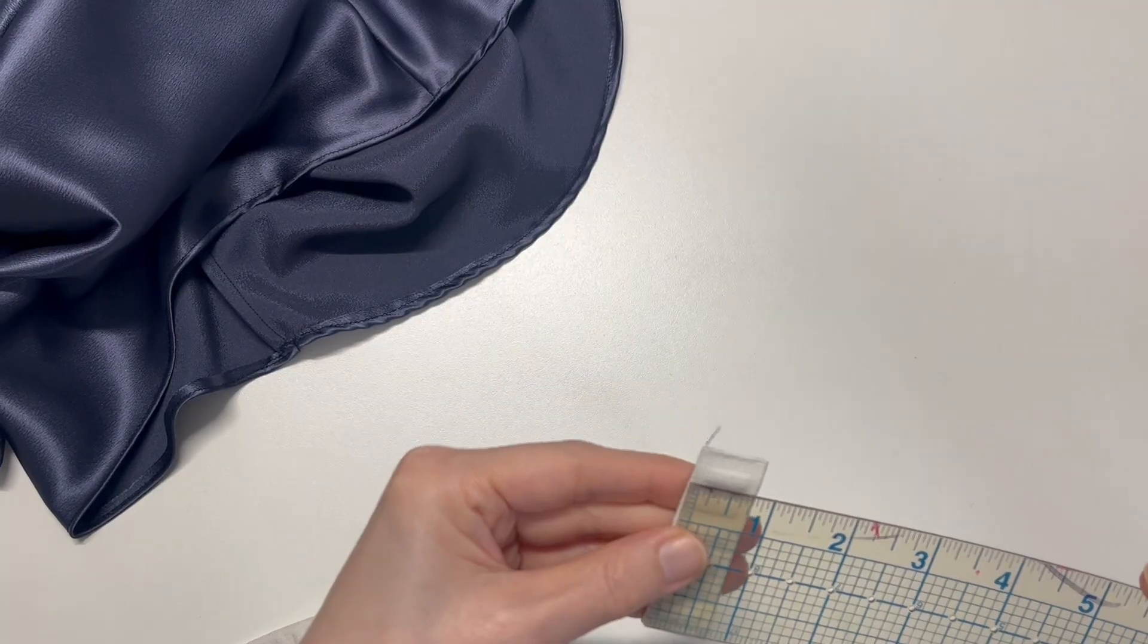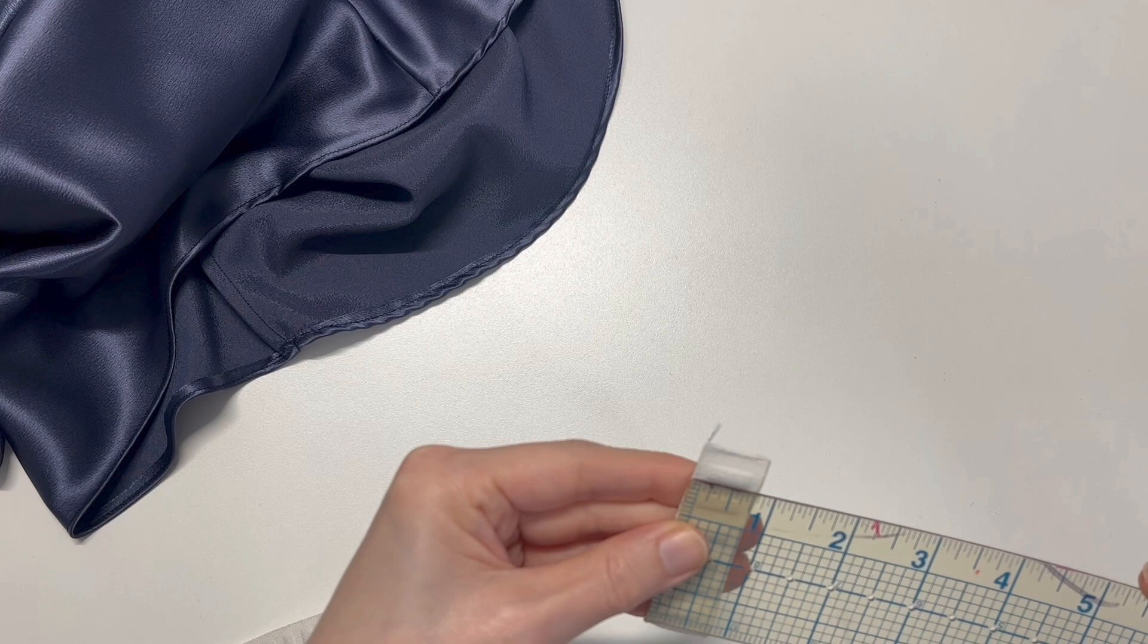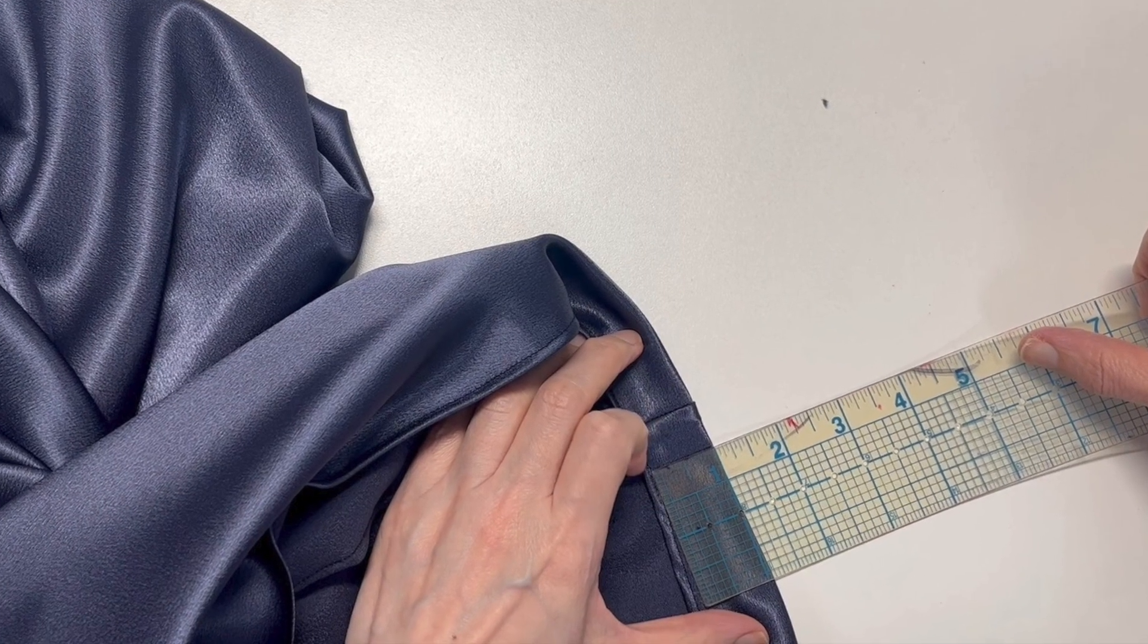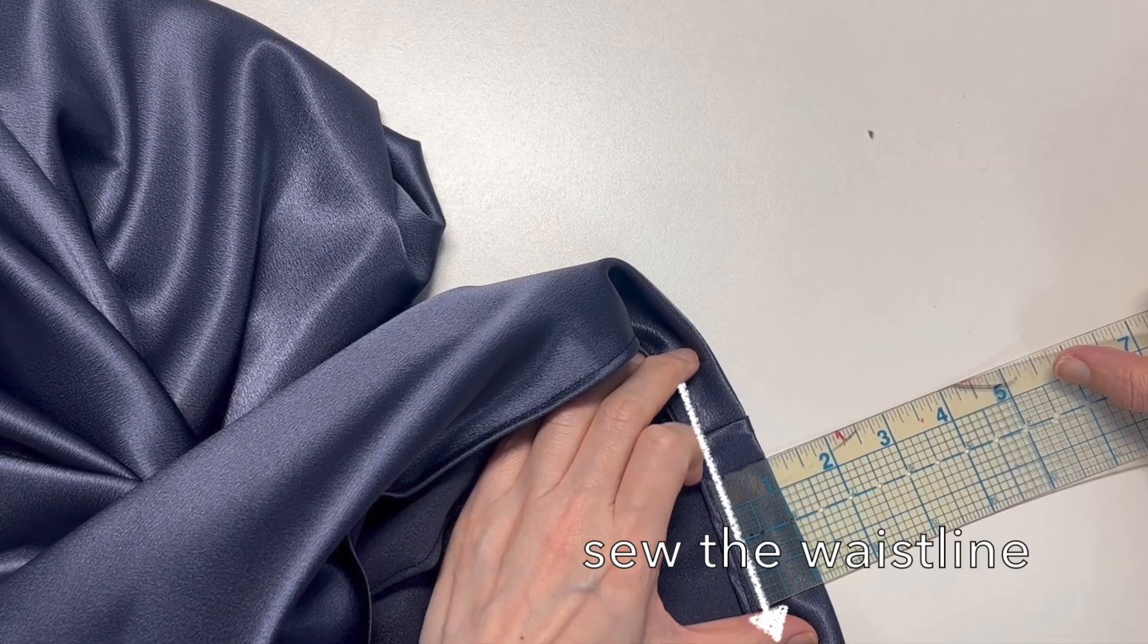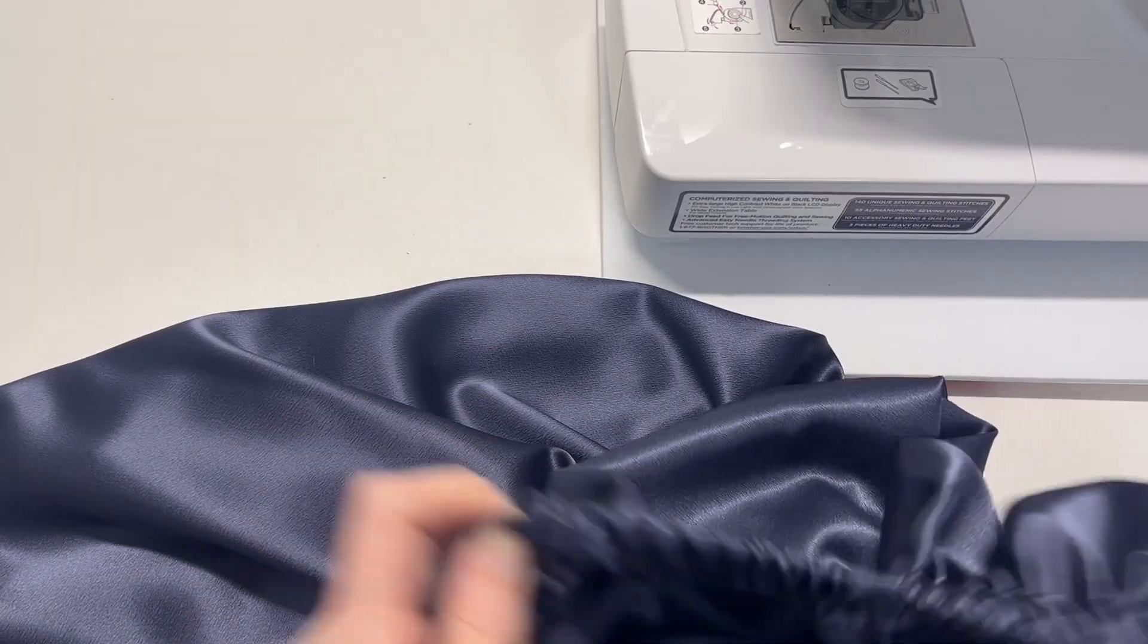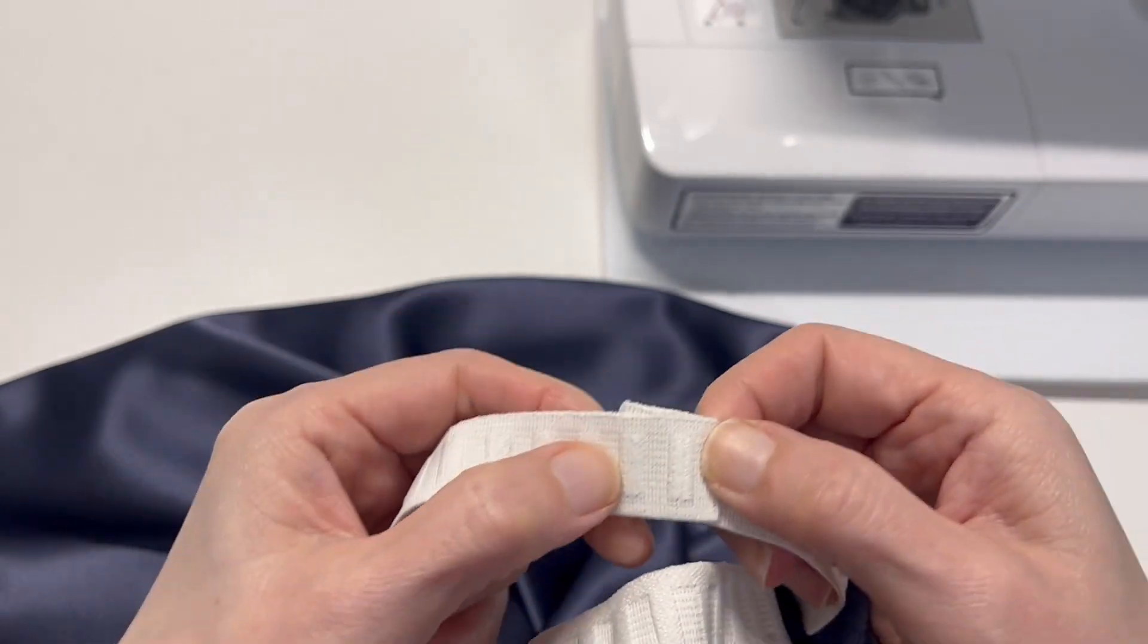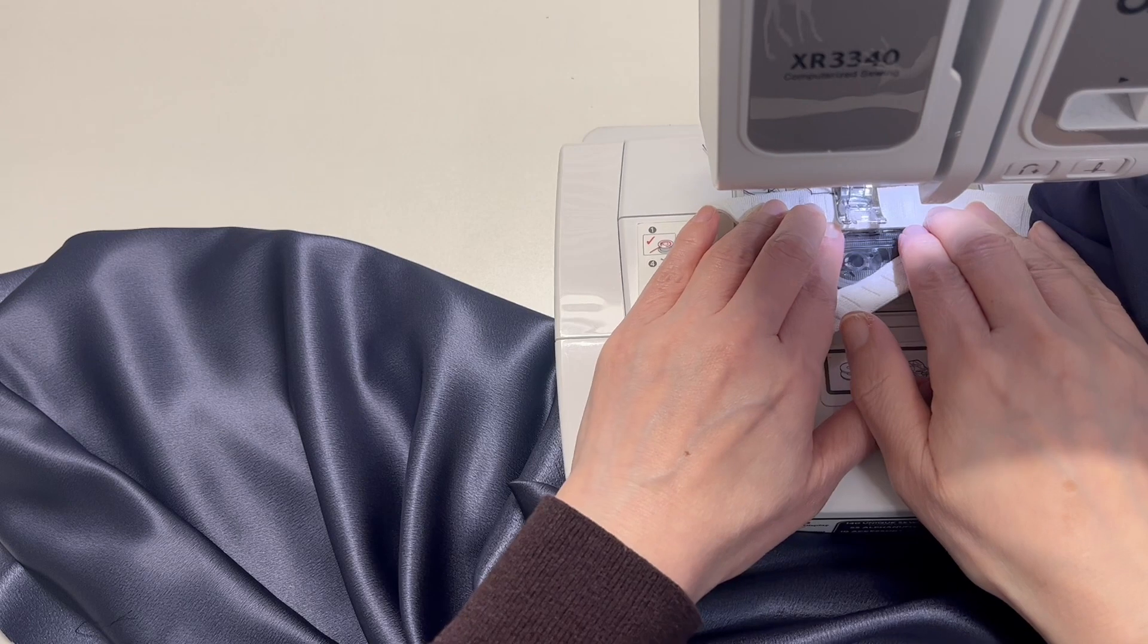Measure the width of your elastic. Mine is 3 quarters inches. If so, the casing width less than 1 inch will be okay. I can insert the elastic into the casing. Fold the waistline to a 1 inch width and sew, leaving an opening. Insert the elastic into the casing. Connect the elastic ends like this and finish the opening.